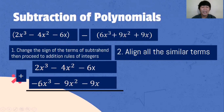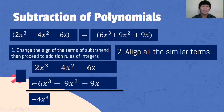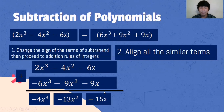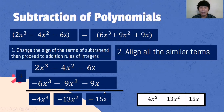What is 2x cubed plus negative 6x cubed? We have different signs, so we subtract and follow the sign of the higher absolute value: that is negative 4x cubed. Negative 4x squared plus negative 9x squared — same sign, so we add: negative 13x squared. Negative 6x plus negative 9x — same sign: negative 15x. So the final answer is negative 4x cubed minus 13x squared minus 15x.